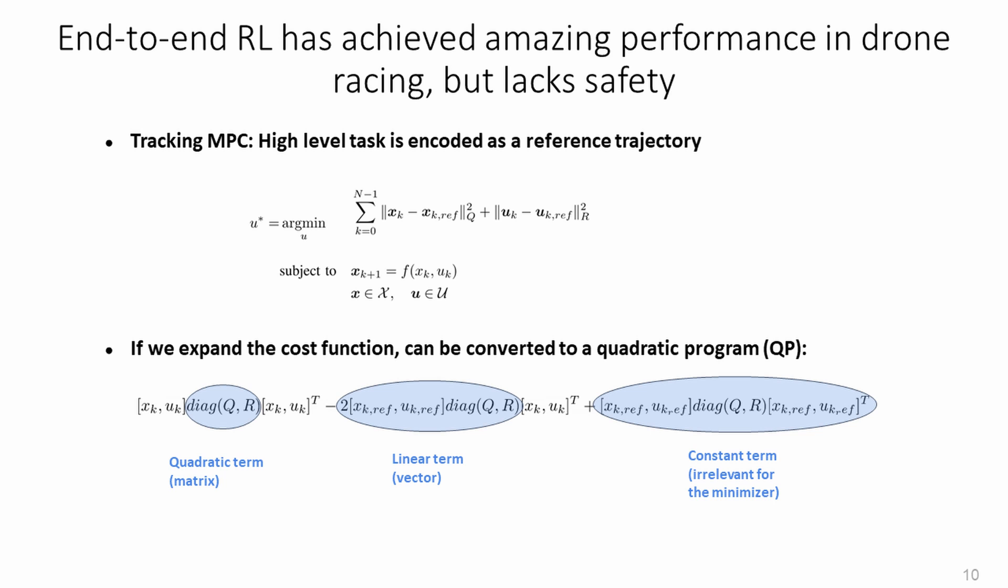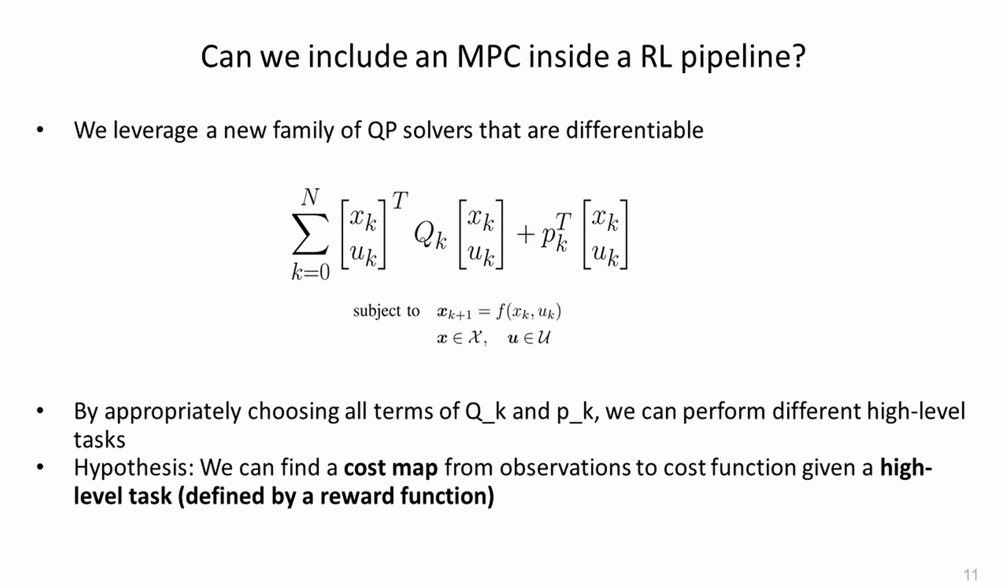If we decompose a tracking model predictive controller and expand its cost function, we can see that there are three terms: a quadratic term, which depends on the tuning parameters, a linear term, which depends on the tuning parameters and on the reference trajectory, and a constant term, irrelevant for the minimizer. All model predictive controllers are often transformed into this quadratic form such that they can be solved in real time.